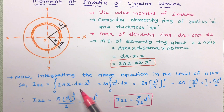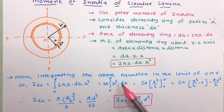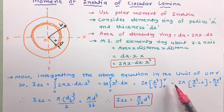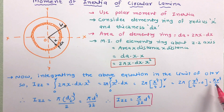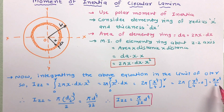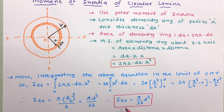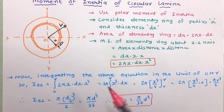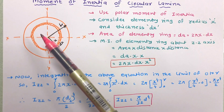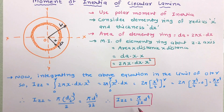The integration of x³ gives x⁴/4, and applying the limits from 0 to R gives Izz = πR⁴/2. Substituting R = d/2 in terms of diameter d and simplifying, the value of Izz is obtained as πd⁴/32. This is the moment of inertia of the circular lamina about the ZZ axis, also called the polar moment of inertia.